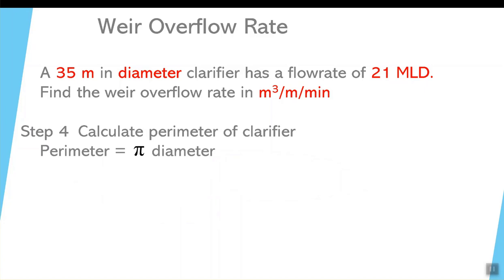Now perimeter is equal to pi times diameter. We know that the diameter is 35 meters. We know what pi is, and so the perimeter is now 109.96 meters.